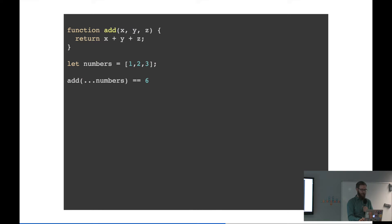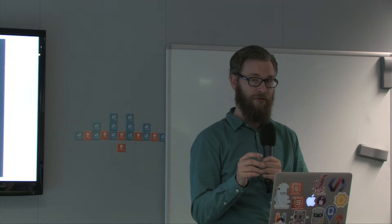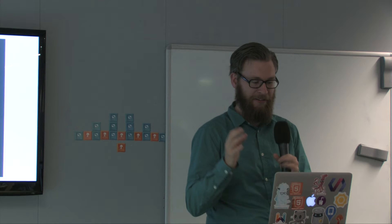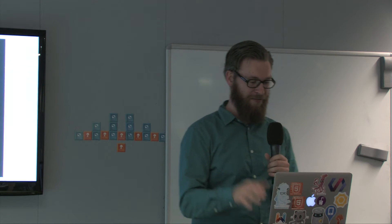There's also a different thing called spread, which is actually the same thing but the other way around. Say you have an array of three values — one, two, and three — but you want to split it into three separate variables. You can do a spread, and then it will be turned into the three variables x, y, and z. So far I haven't found a use case for it, so if you have one, please let me know.